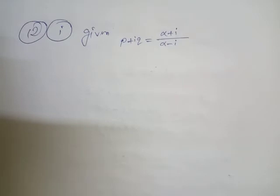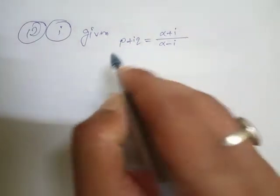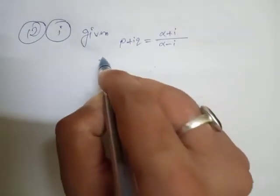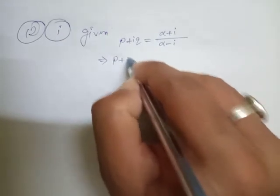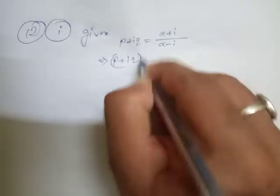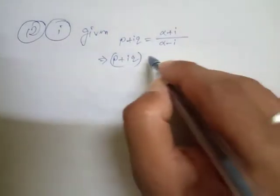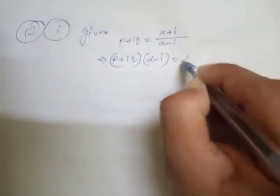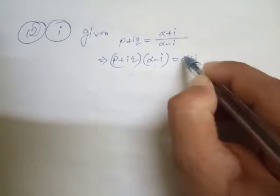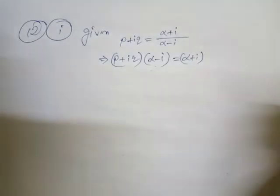Now we'll go for the cross multiplication here. So if we go for the cross multiplication, then (p + iq)(α - i) = α + i.